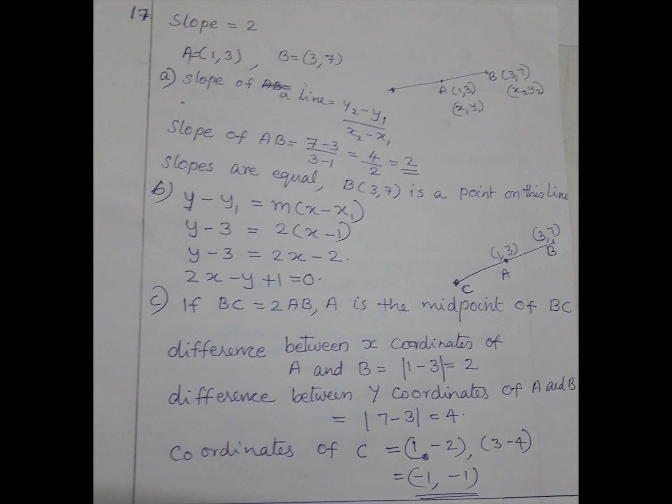C coordinates: BC equals 2AB. A is the midpoint of BC. X coordinates difference between A and B, 1 minus 3 equals 2. Y coordinates of A and B, 7 minus 3 is 4. Coordinates of C: 1 minus 2 equals minus 1. C coordinates (minus 1, minus 1).